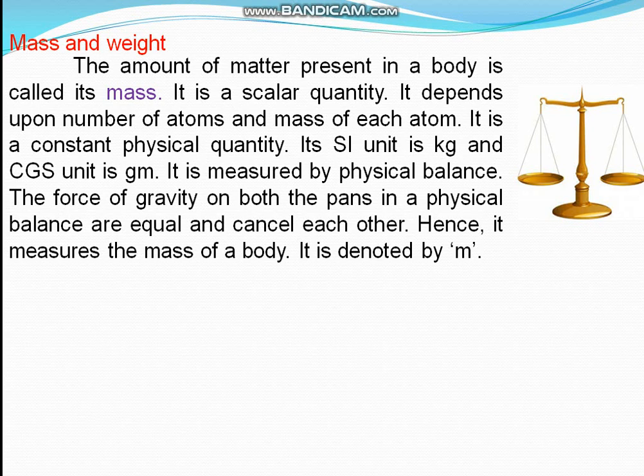Mass is measured by a physical balance, pan balance, or beam balance. The force of gravity on both pans in a physical balance is equal — the force applied on the left pan equals the force on the right pan, and since the gravitational force on both pans is equal and cancels each other, it measures mass. A spring balance is used to measure weight.